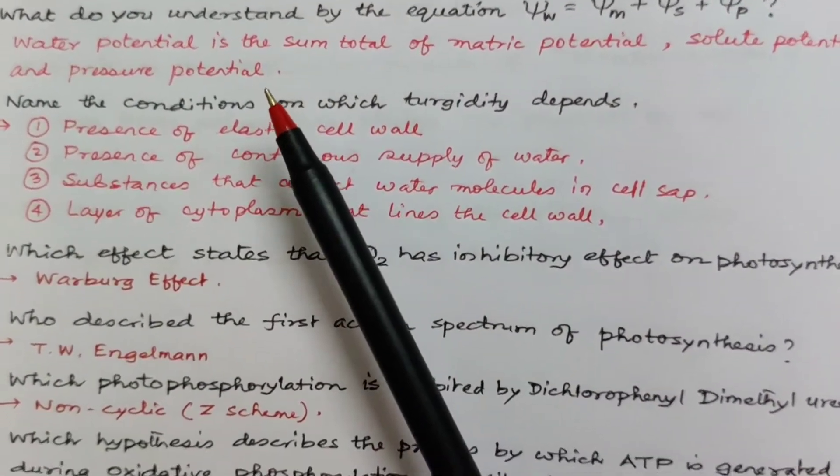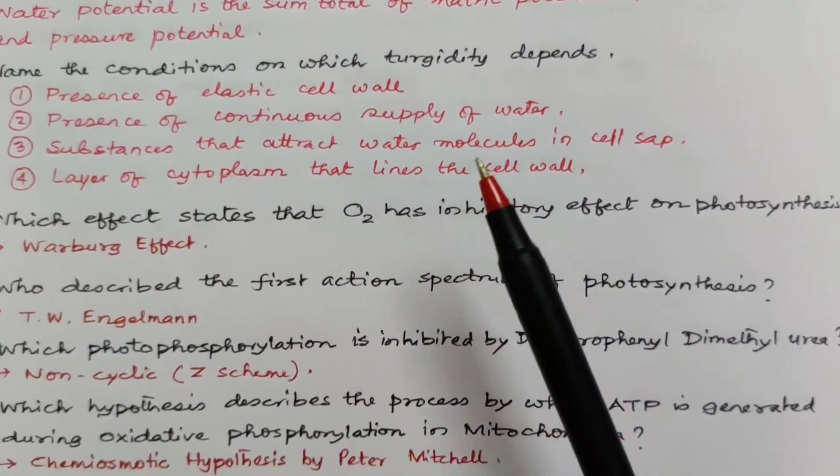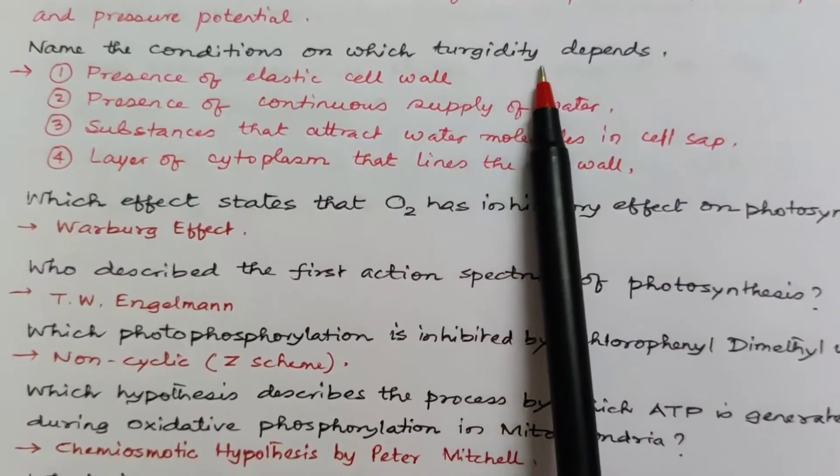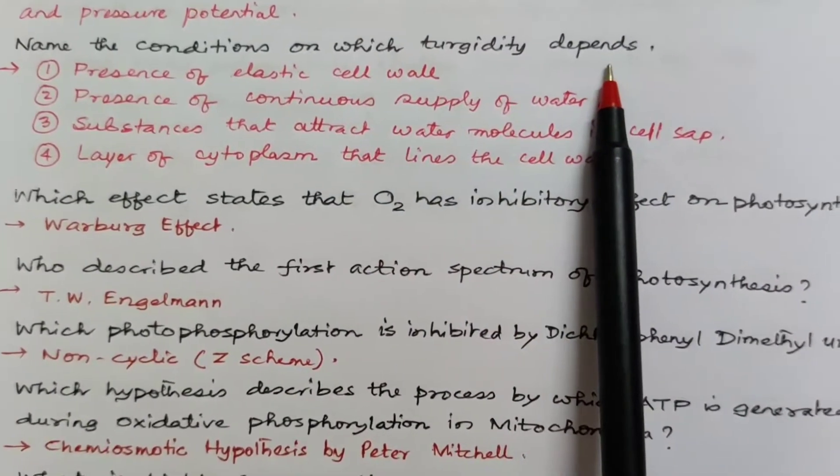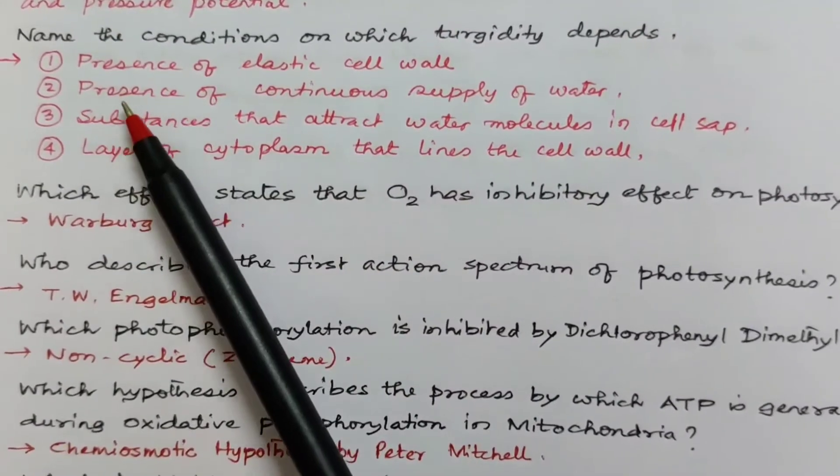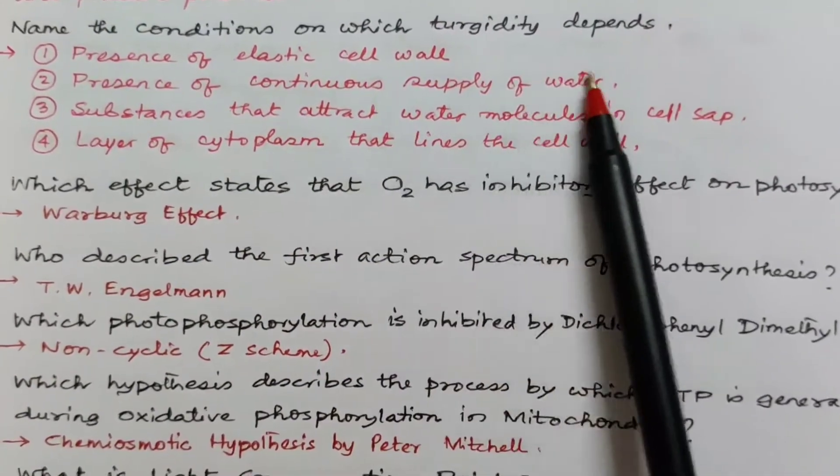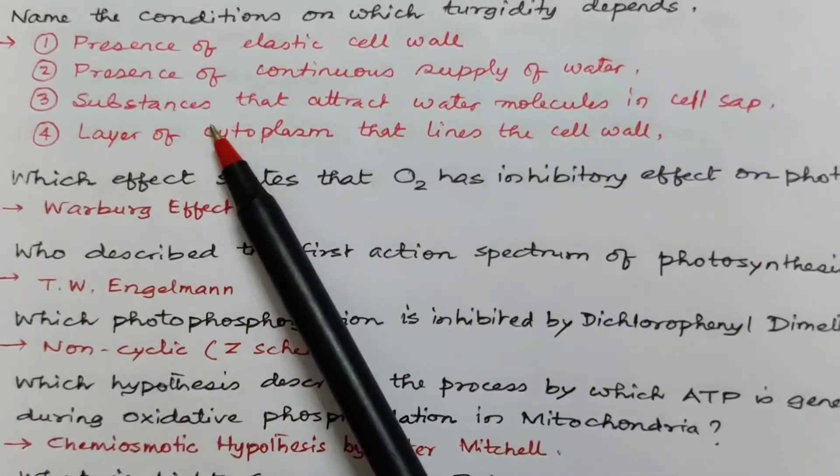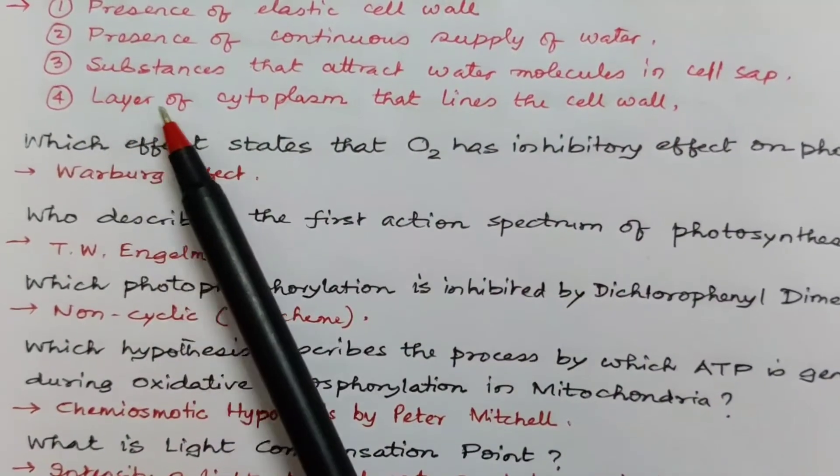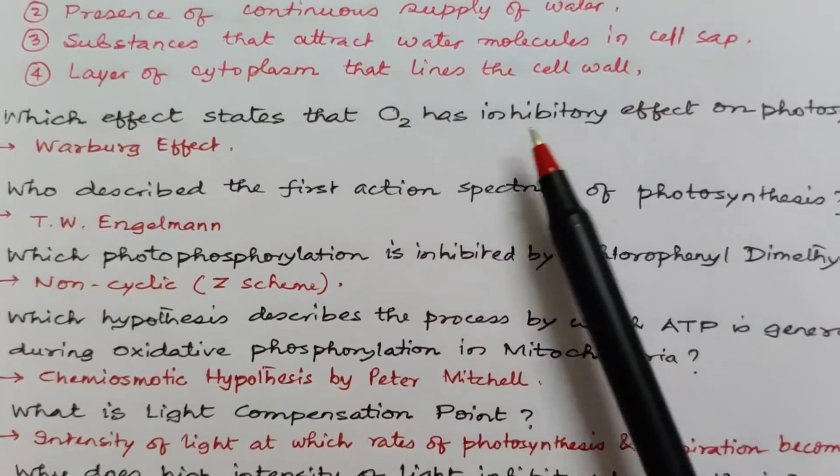Name the conditions on which turgidity depends. Do you remember turgidity? It was already there in class 10 syllabus. It depends on presence of elastic cell wall, the presence of continuous supply of water, presence of substances that attract water molecules in the cell sap, the layer of cytoplasm that lines the cell wall.